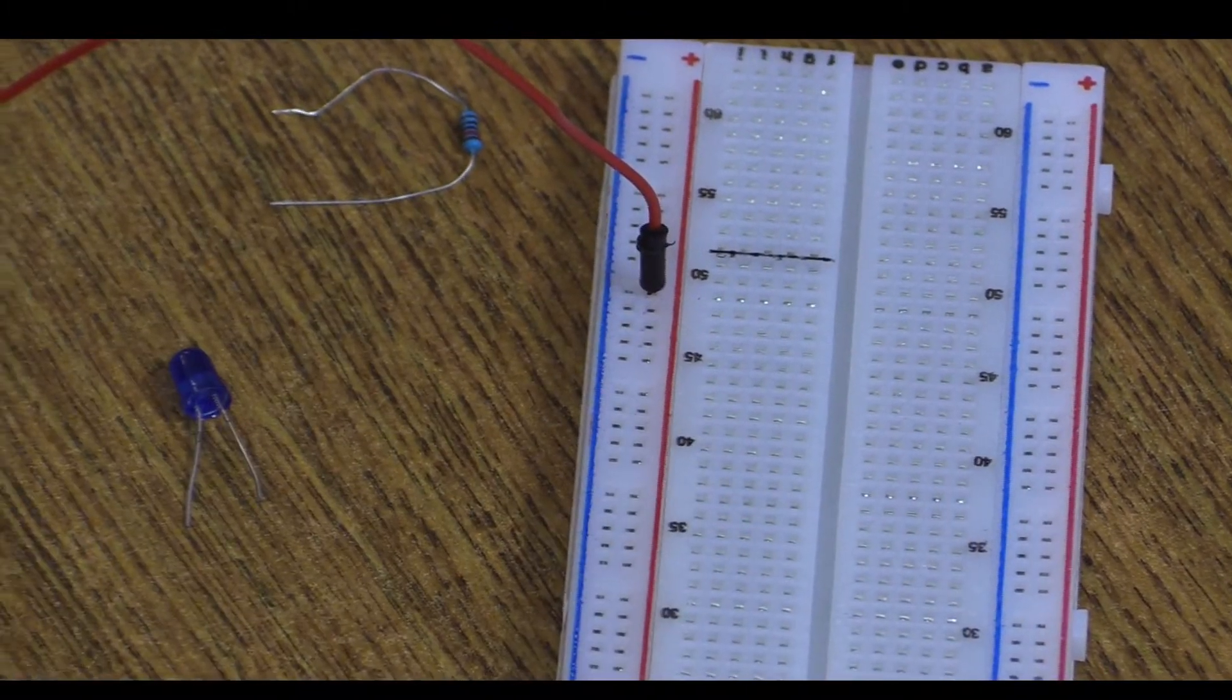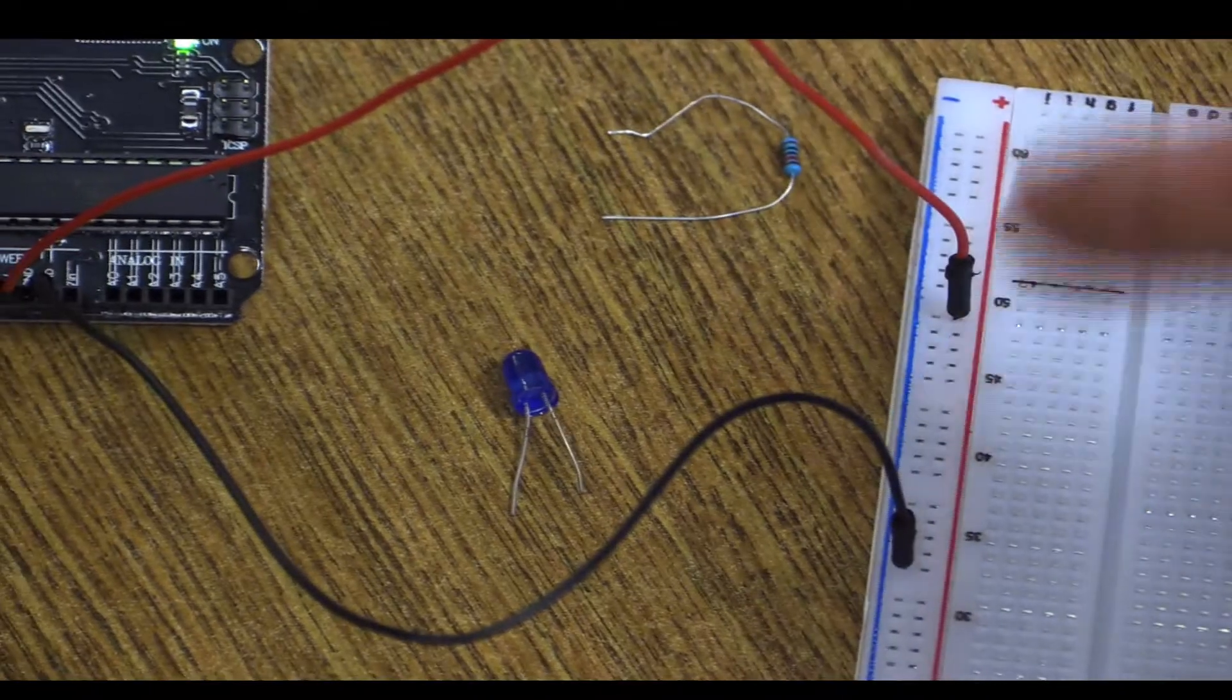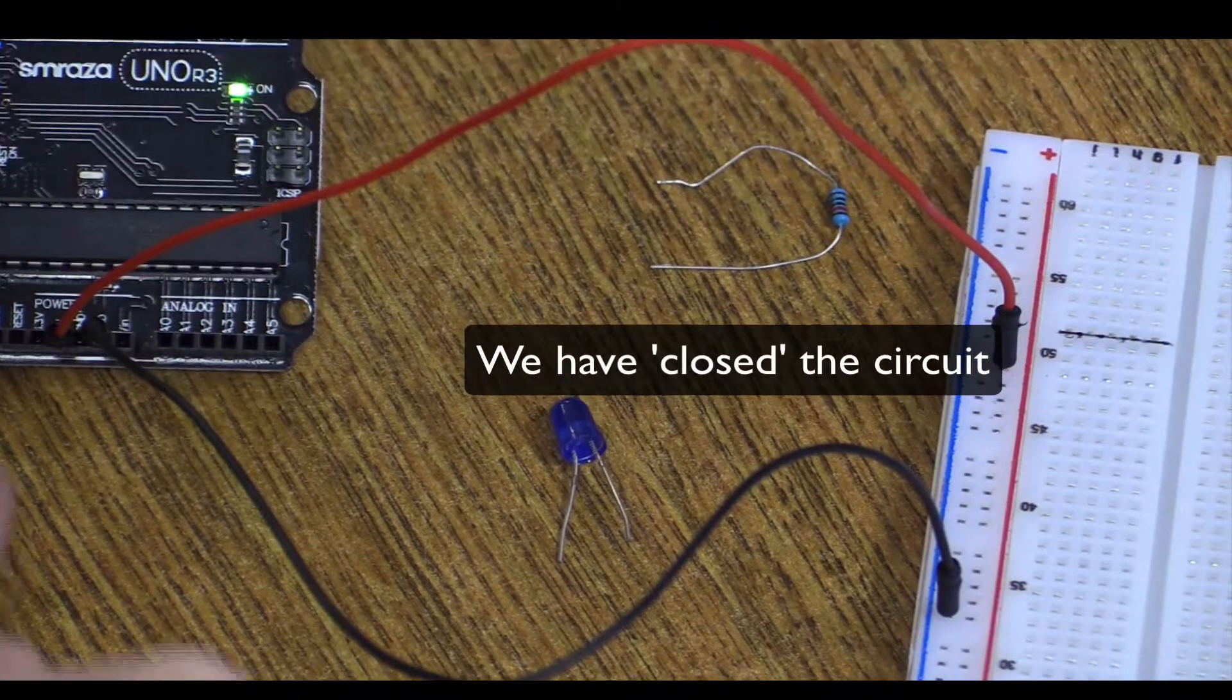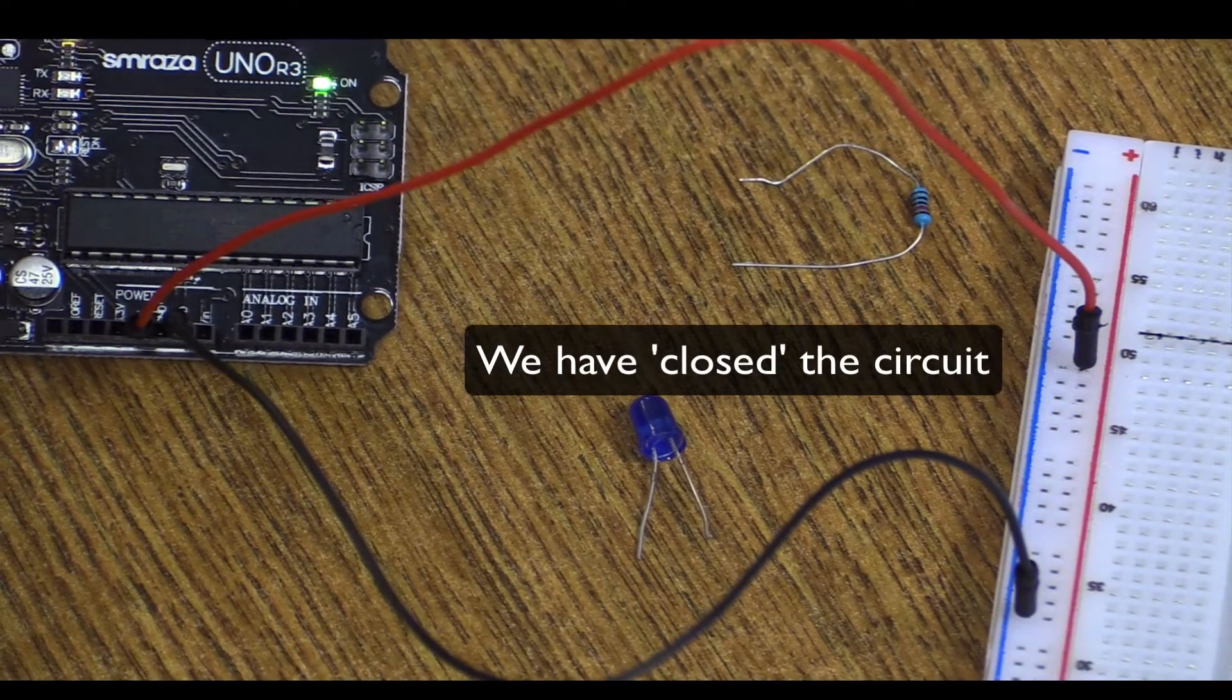This black one is the ground. When I plug this into the minus, it doesn't matter where it is along that line, it's now the ground. The power comes in through here and it comes back through the other side. Now, how do we know that?